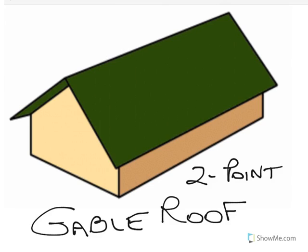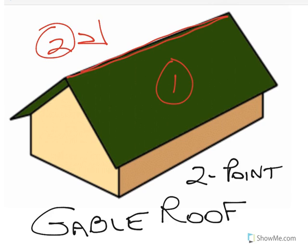You are looking at an example of a two-point perspective gable roof. A gable roof is a very common kind of roof that has two rectangular areas, one and then number two on the other side, that tip in to form the crest of the roof. It's quite easy to draw a two-point gable roof, so let's go ahead and I'll show you how to do it.